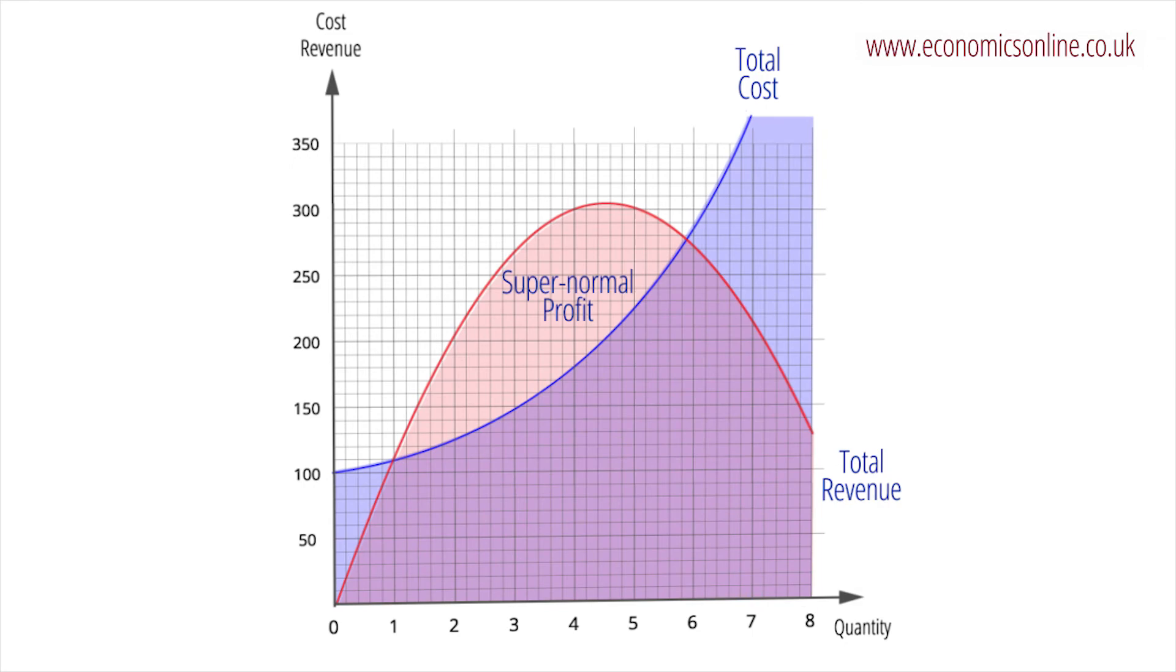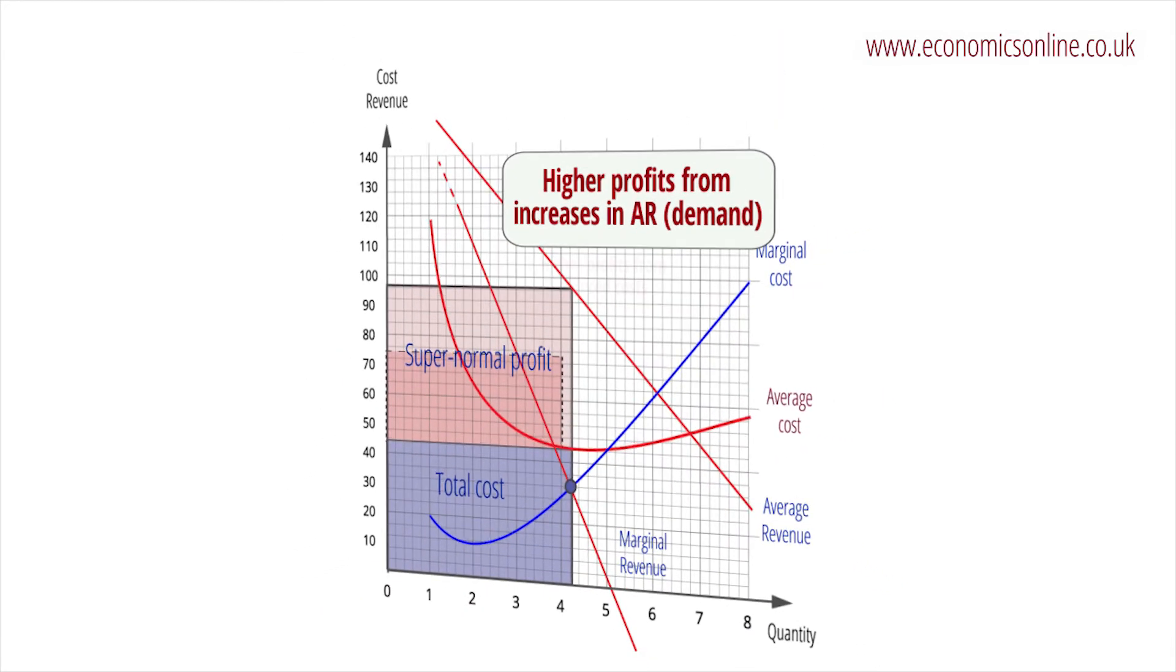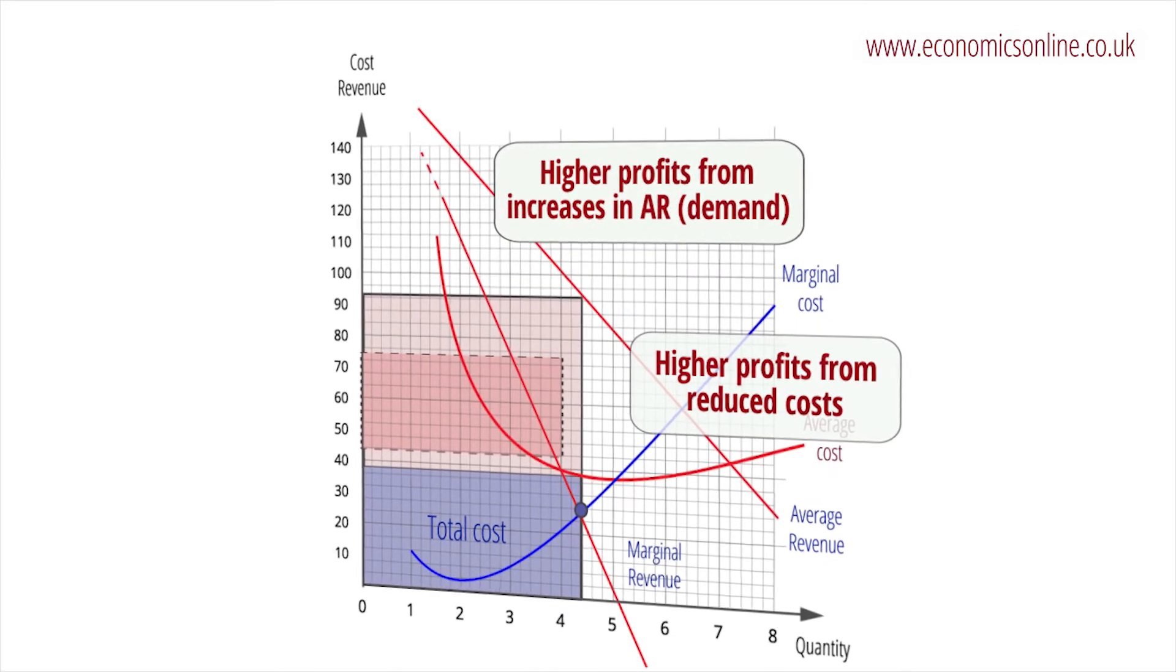Profits can increase either when revenue increases or when costs fall. If fixed costs fall, the average cost curve falls, and when marginal costs fall, both cost curves will fall.